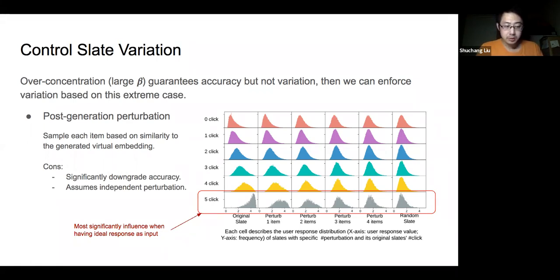However, this approach is hard to control and it may significantly downgrade the generative performance. As you can see in the figure for a slate of size five and the optimal user response as condition correspond to the last row, changing two items already make the user response distribution close to that of a random slate. So post-generation perturbation ignores the fact that the items are related to each other in the slate and thus may influence the user satisfaction of the entire slate.